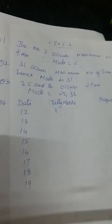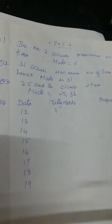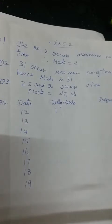In our previous class we were discussing about what is mean. Mean means average — that is sum of observations by number of observations. So the mean concept we had in the first exercise, that is 5.1.